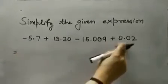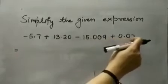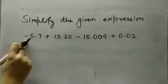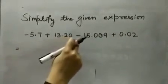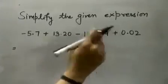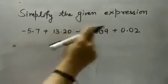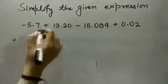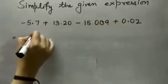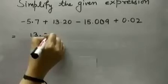Now, we are having 2 positive numbers 13.20 and 0.02 and 2 negative numbers minus 5.7 minus 15.009. So, I am going to add the positive numbers 13.20 and 0.02 will become 13.22.